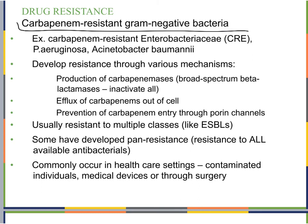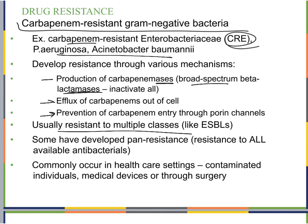Carbapenem-resistant gram-negative bacteria include the carbapenem-resistant Enterobacteriaceae (CRE). They develop resistance through several mechanisms: production of carbapenemases — broad-spectrum beta-lactamases that inactivate all beta-lactams and carbapenems — efflux of carbapenems out of the cell, and prevention of carbapenem entry through decreasing porin channels. These are usually resistant to multiple drug classes, as resistance genes are lumped together on plasmids. Some have developed pan-resistance — resistance to all available antibacterials — and they commonly occur in healthcare settings through contaminated individuals, medical devices, or surgery.